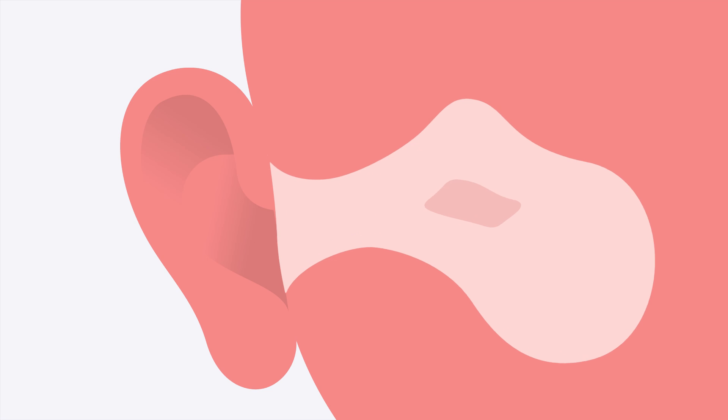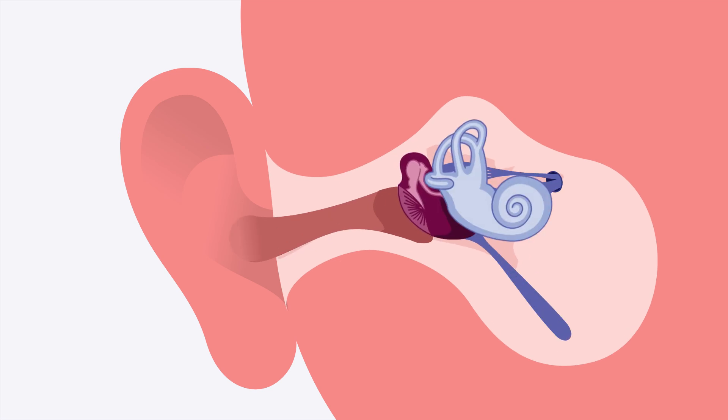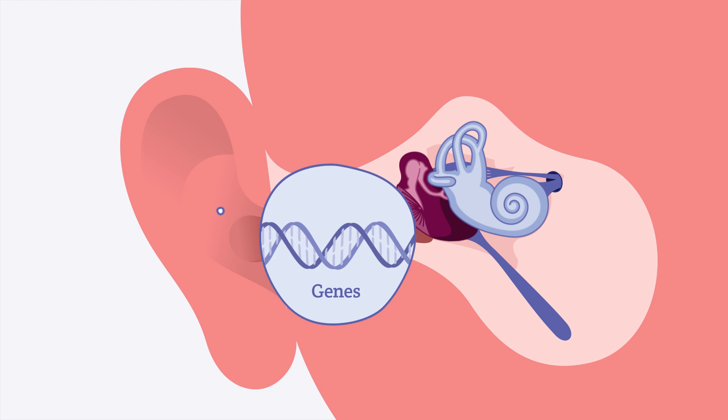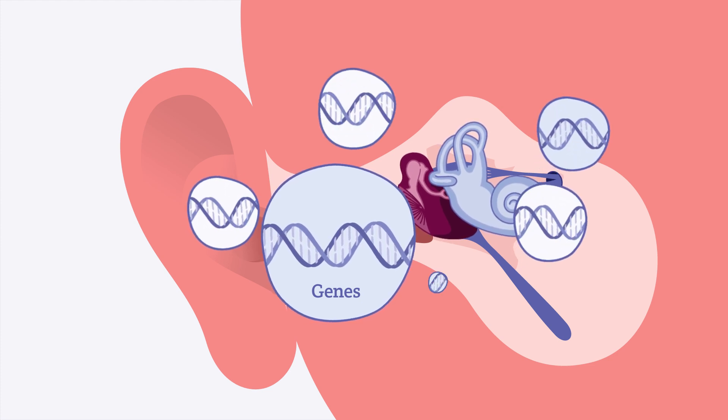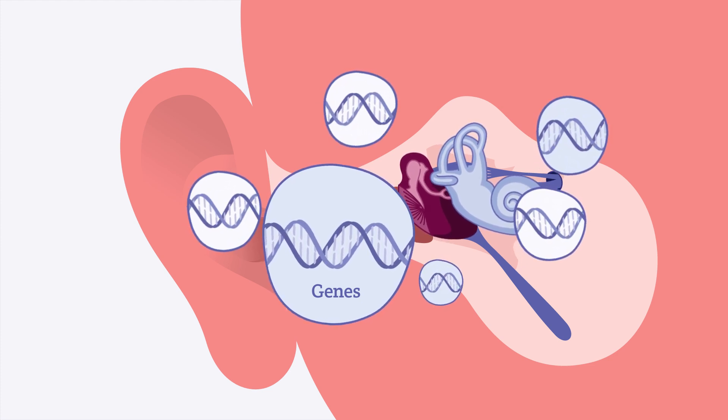The human ear is complex, and there are many parts that work together to help us hear. There are hundreds of genes that help these parts of the ear develop and function. And when one gene doesn't contain the correct instructions, hearing loss can occur.